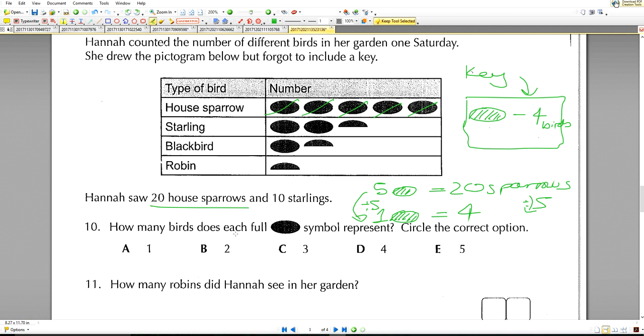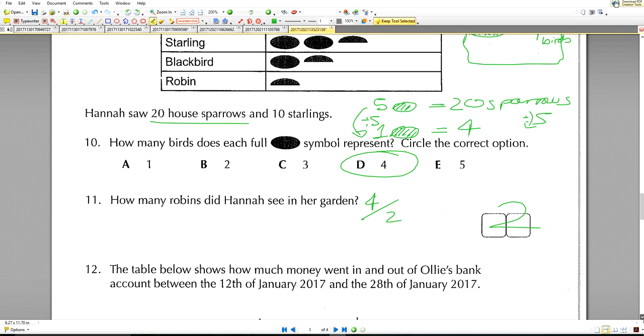How many birds does each full one represent? So the answer is four. Ten is four. How many robins did Hannah see in her garden? So robins will be, now that's half a picture. So if the full one is four, if it's half, it will give us two.